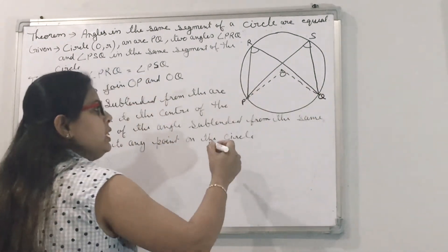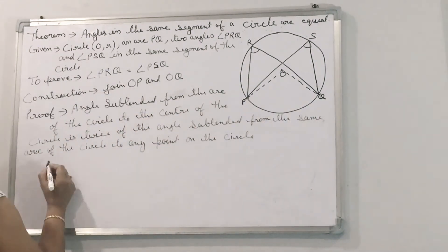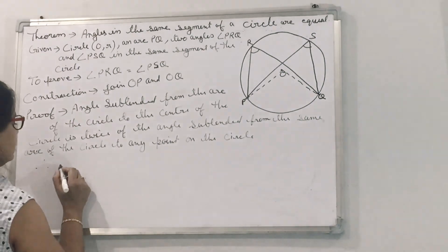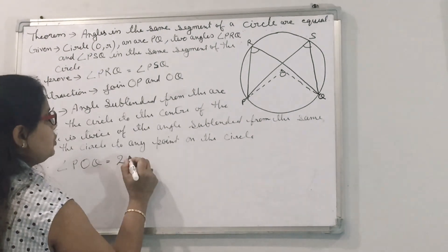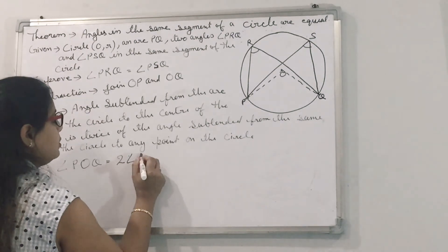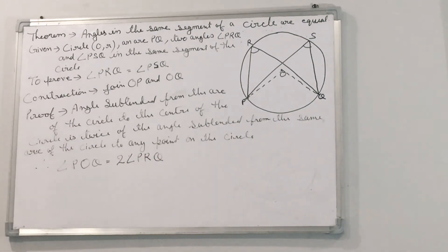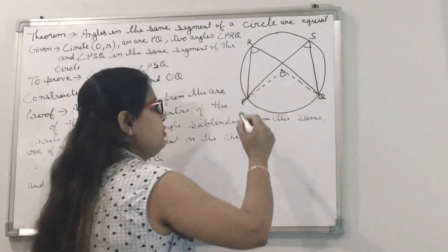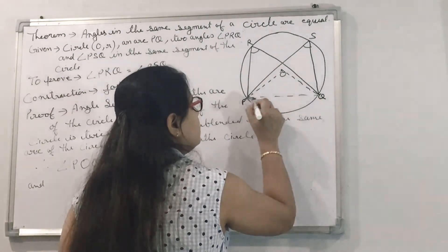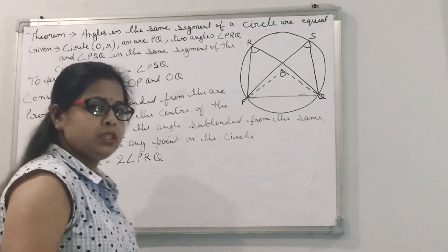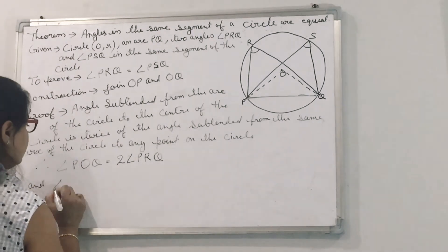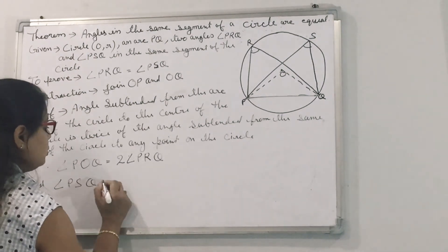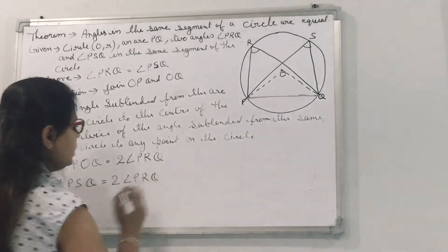It means that angle POQ is twice of angle PRQ. Both of the angles lie in the same segment. Similarly, angle POQ is equal to 2 times angle PSQ, and the reason is the same — because both angles are subtended from the same arc.